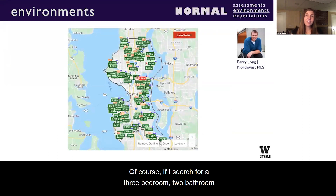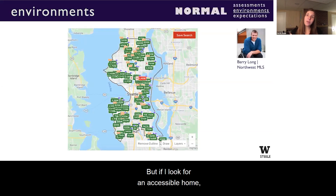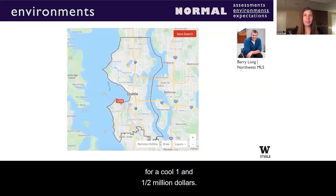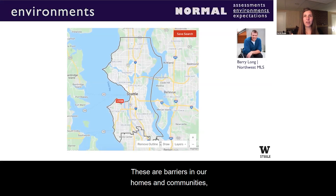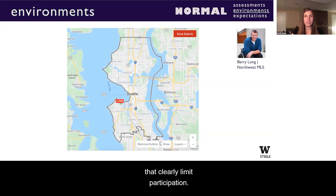Of course, if I search for a three-bedroom, two-bathroom home in Seattle in 2020, I see 133 properties. But if I look for an accessible home, this immediately drops to just one for a cool one and a half million dollars. These are barriers in our homes and communities — our physical embodiments of our perceptions of normal movement that clearly limit participation.